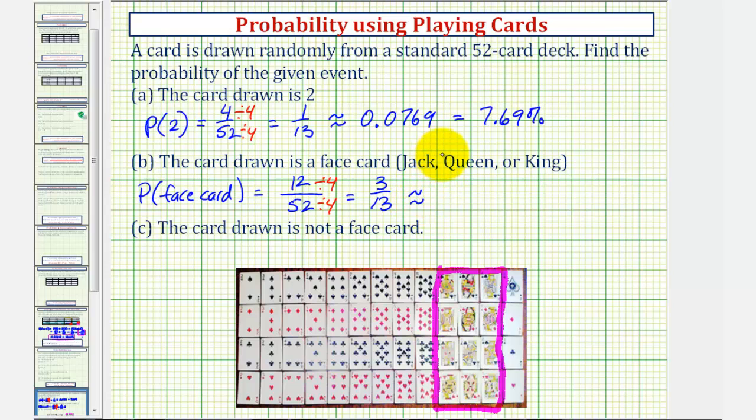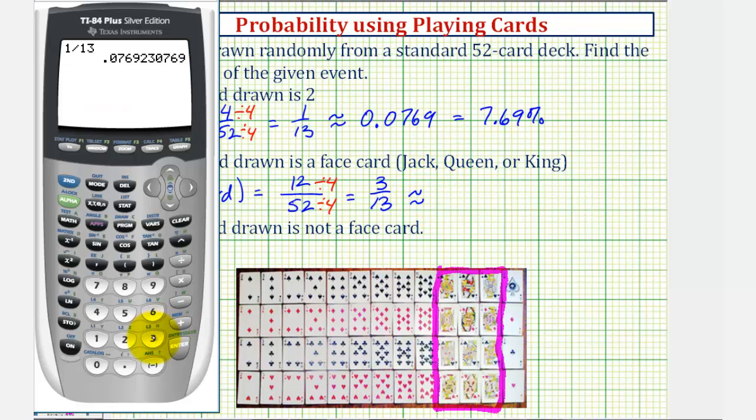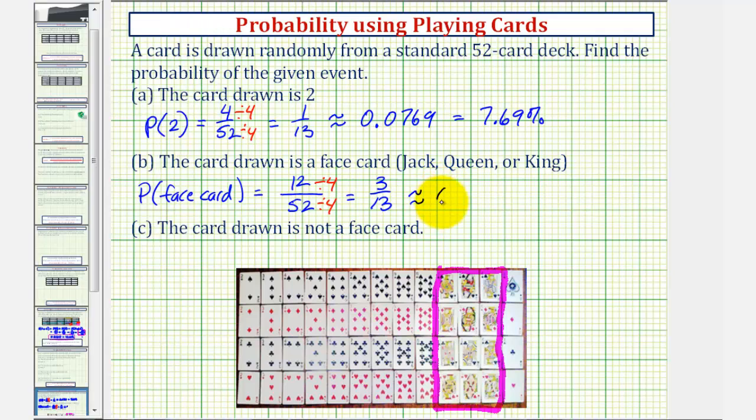Again, let's convert to a decimal and a percent. So 3 divided by 13 would be approximately 0.2308. Notice how the 6 here indicates we round up. Which would be 23.08%.